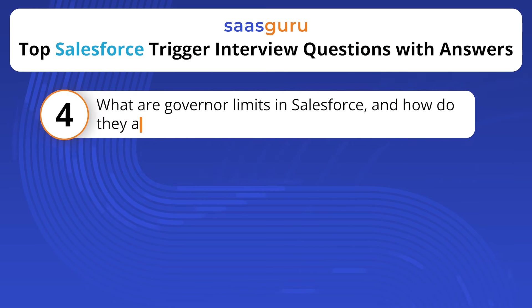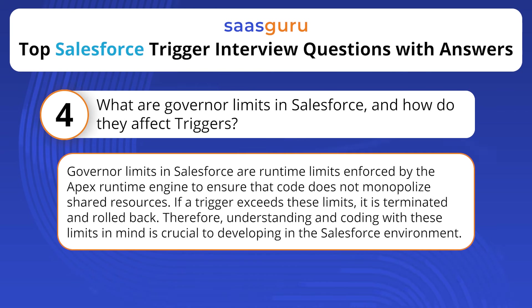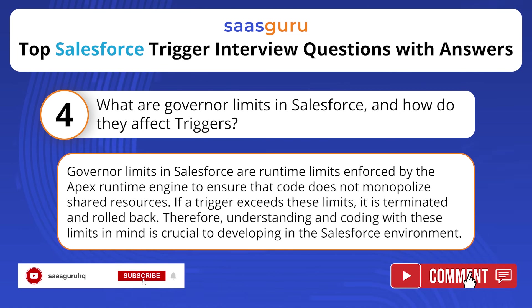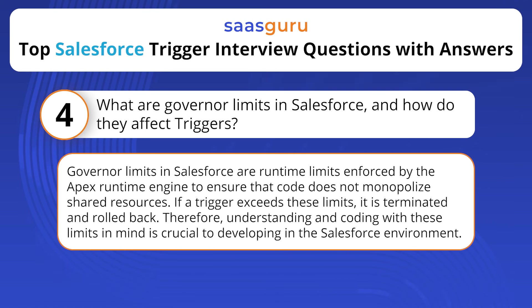What are governor limits in Salesforce and how do they affect triggers? Governor limits in Salesforce are runtime limits enforced by the Apex runtime engine to ensure that code does not monopolize shared resources. If a trigger exceeds these limits, it is terminated and rolled back. Therefore, understanding and coding with these limits in mind is crucial to developing in the Salesforce environment.